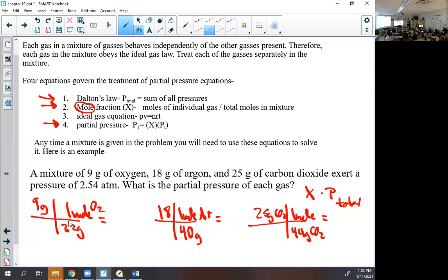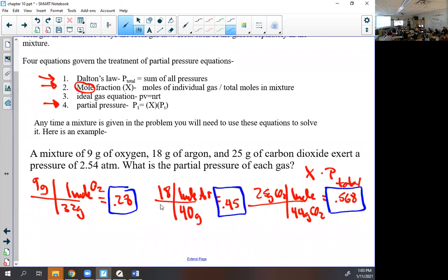So 9 divided by 32, what number? 18 over 40 is 0.45, and 25 over 44. We need all these numbers but we need more.